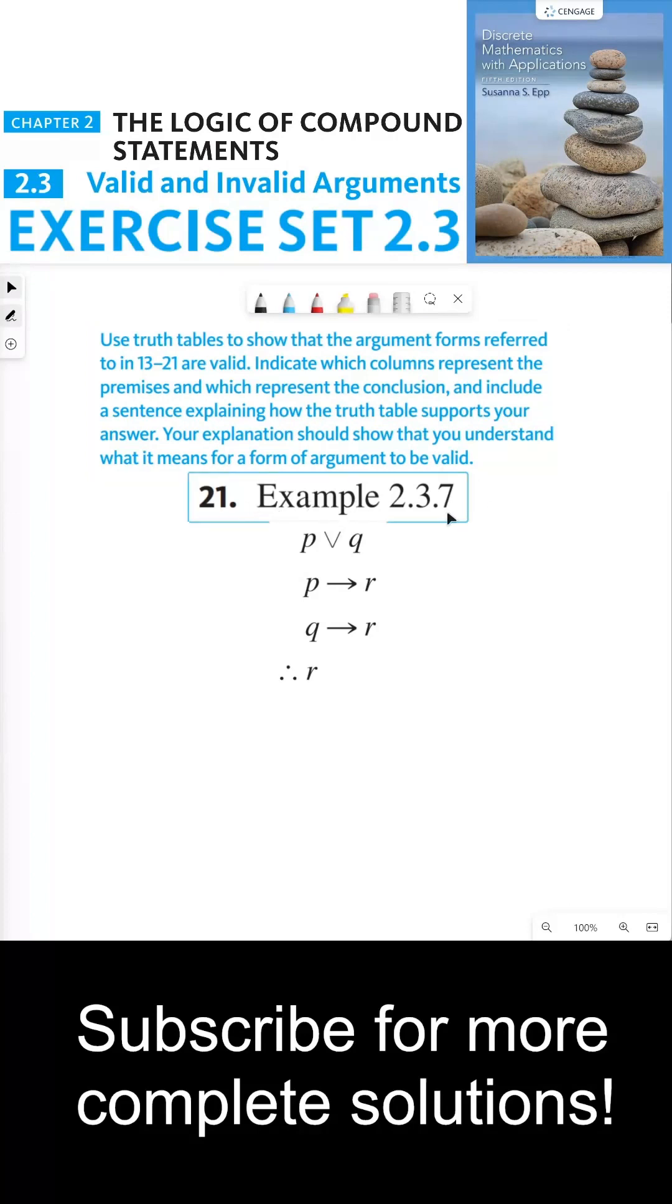So number 21 is example 2.3.7, which I pulled up right here, which says P or Q, P implies R, Q implies R, therefore R. So first, we're going to create a truth table for all four of these statement forms.